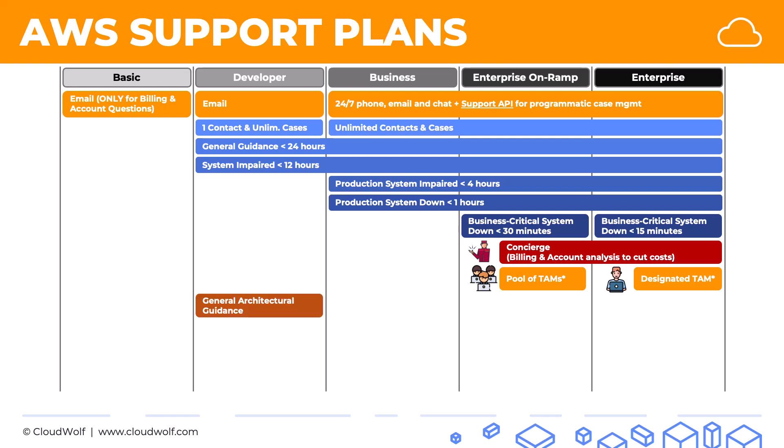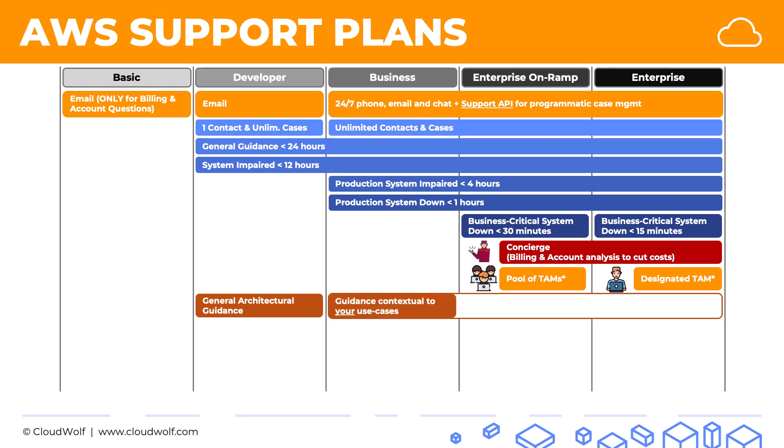For architectural guidance: in the developer plan you only get general architectural guidance. In the other three plans — business, enterprise on ramp, and enterprise — you get architectural guidance specific to your use cases and applications. In business, you get guidance contextual to your use cases. In enterprise on ramp, you get a consultative review based on your applications once per year. In enterprise, you get more than one consultative review. The main exam takeaway: developer gets general guidance; the other three get use-case-specific guidance.